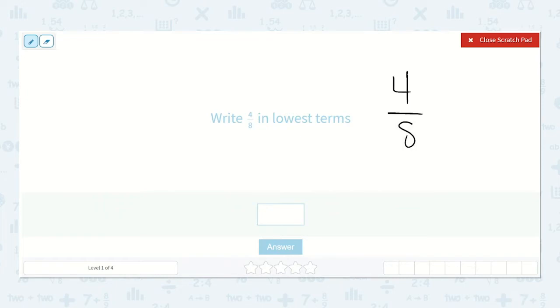4 eighths. Well, I know that we can divide the top and bottom of a fraction by a number, and as long as we divide the top and bottom by that same number, then we are reducing our fraction, and that fraction still is the same value, it is just shown in a different way.